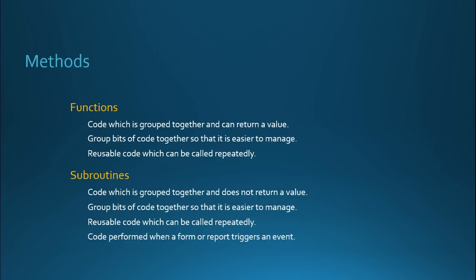Subroutines are basically the default of what Access creates in the background to handle any of our events when we click on a button, select a combo box dropdown, or update a value in a text box, things like that. So when we want to create some sort of event handler, that event handler is going to be created by default as a subroutine in Access.